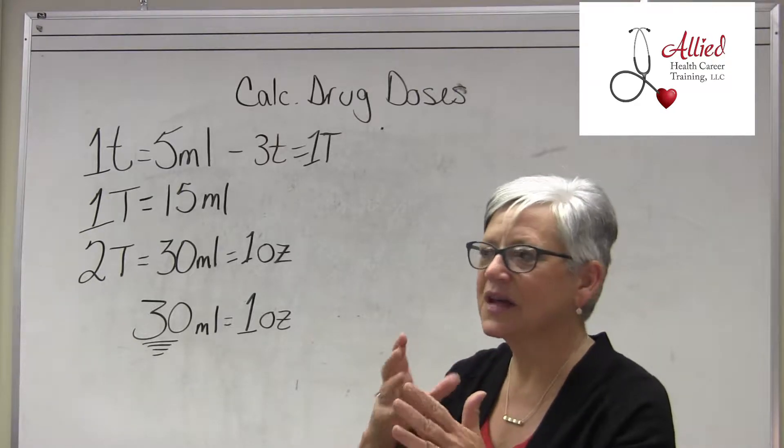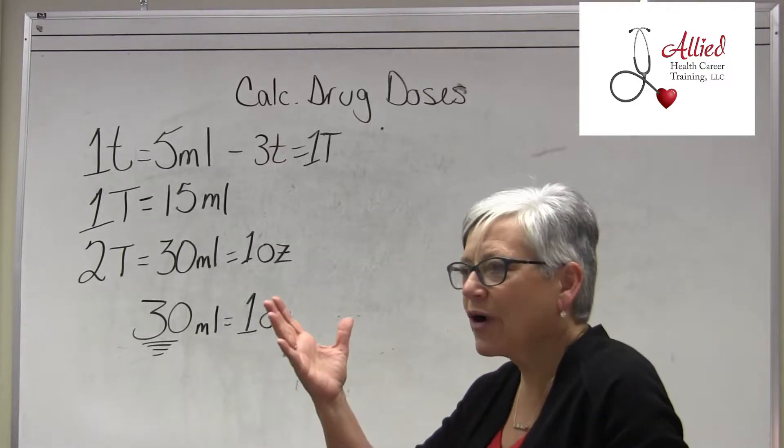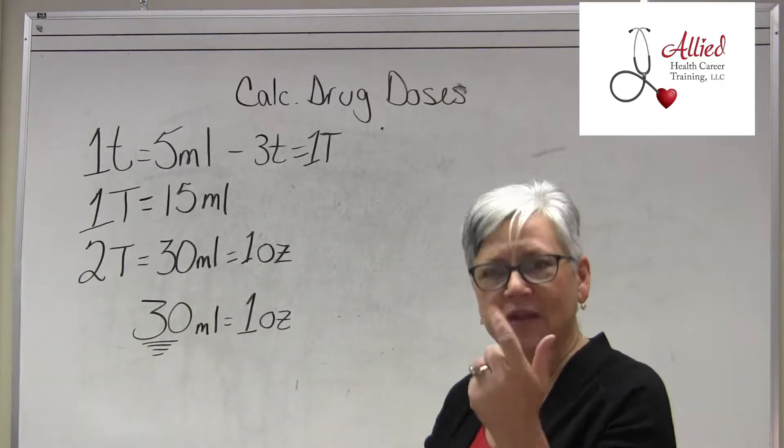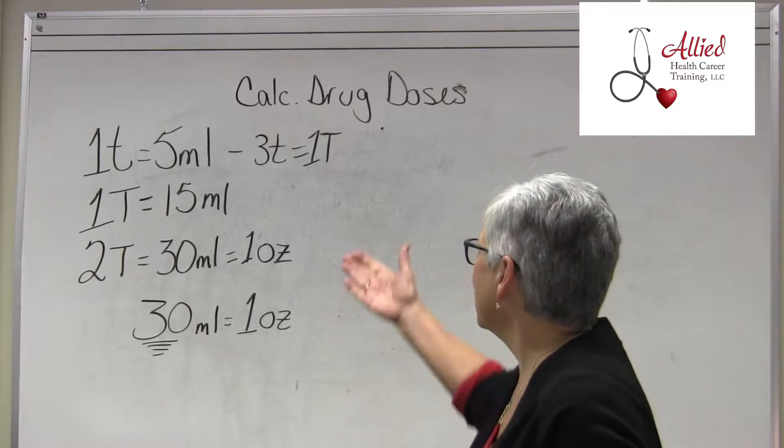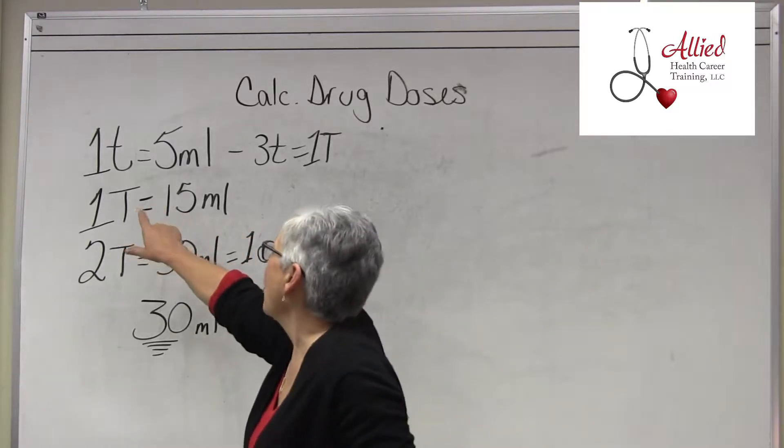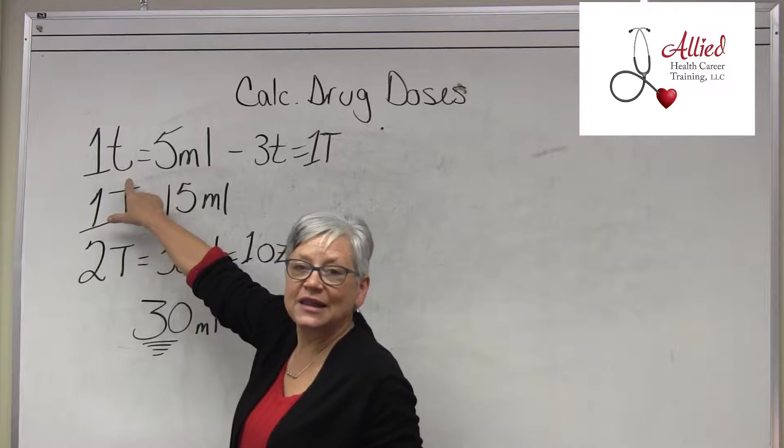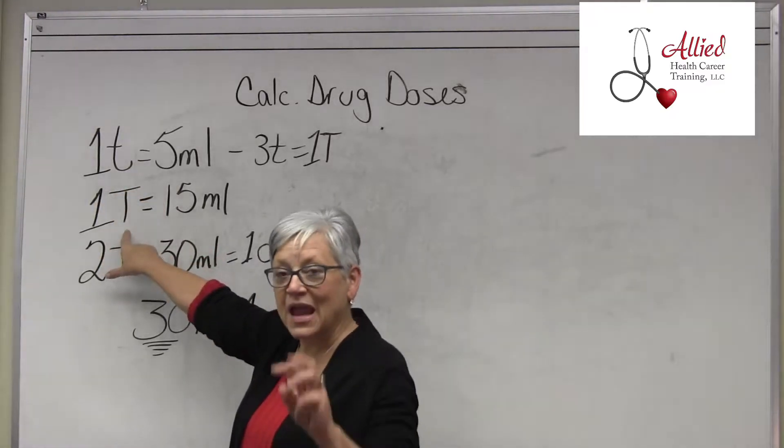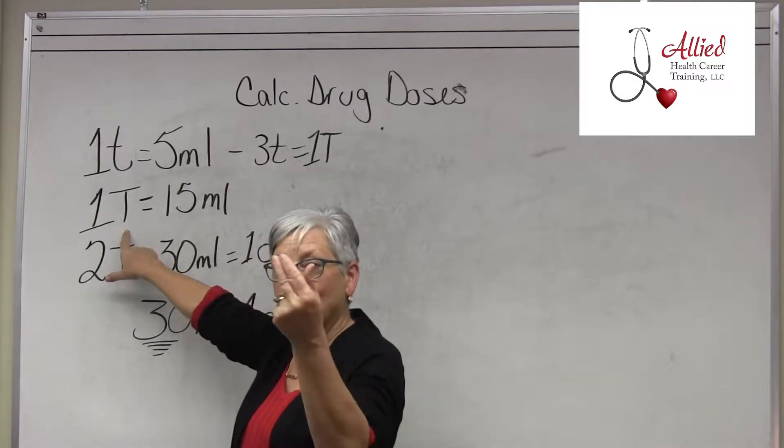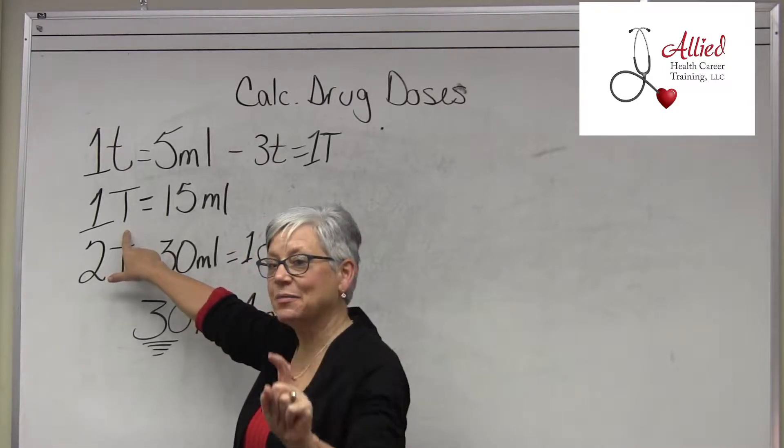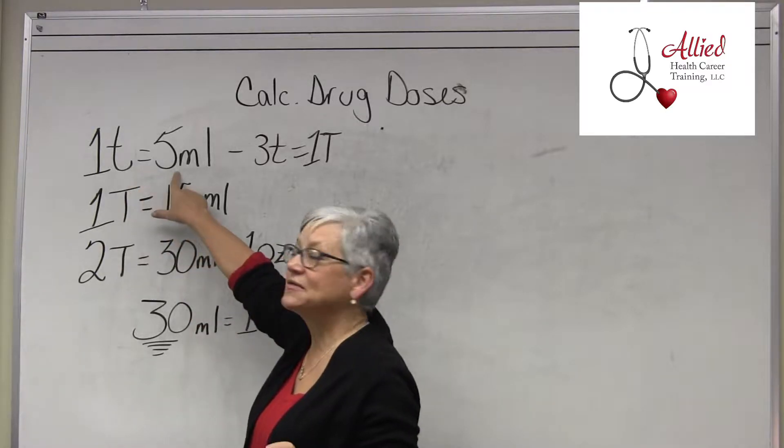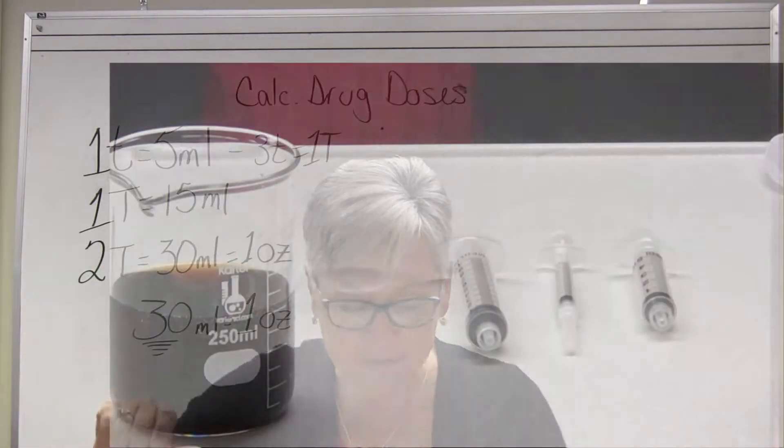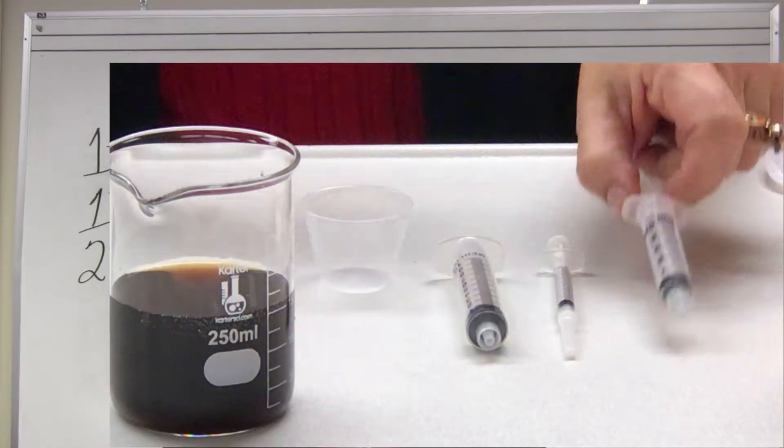Some of you are used to cups, ounces, that kind of thing, and yet medications come out in milliliters, milligrams. How do they go back and forth? That's what we're going to figure out right now. On the board you can see I have one teaspoon - a little T is a teaspoon, a big T is a tablespoon - and it takes three teaspoons to make one tablespoon. A teaspoon is five milliliters.